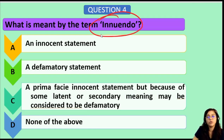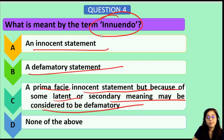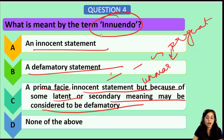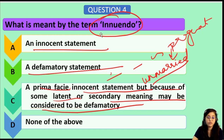Next: What is meant by the term innuendo? Innuendo means a prima facie innocent statement which, because of some latent or secondary meaning, may be considered to be defamatory. For example, if it is published in the newspaper that a certain woman is pregnant, this can be defamatory if that lady is unmarried. So the statement appears innocent on its face, but if it refers to an unmarried woman, it can be defamatory. Therefore, the answer for the term innuendo is option C.